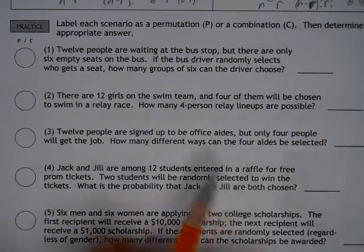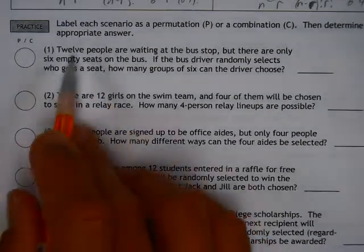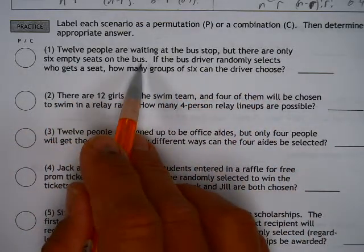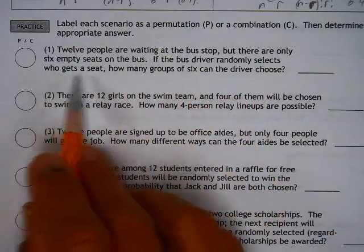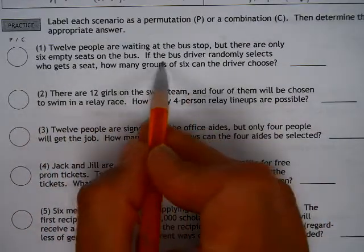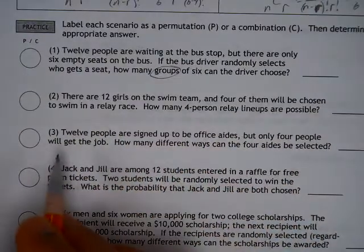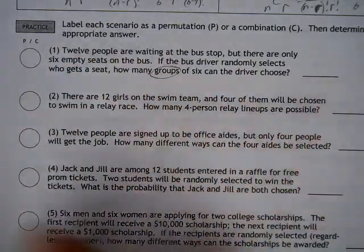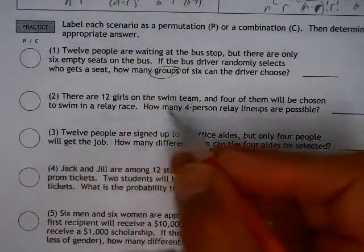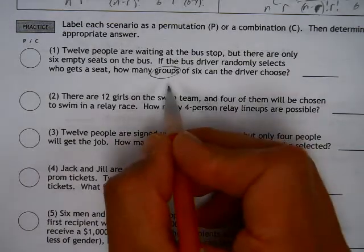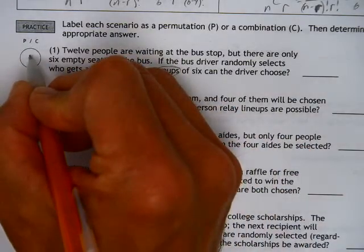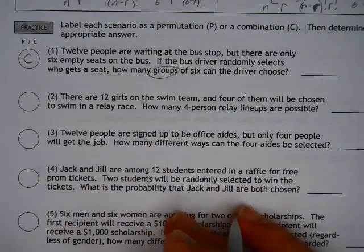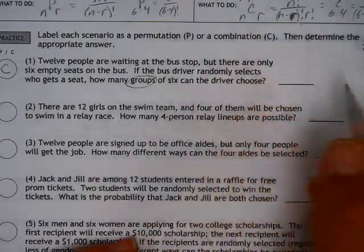Here we don't know which is which — we have to get that from the problem. 12 people are waiting at a bus stop but there's only six empty seats on the bus. The bus driver randomly selects who gets a seat. How many groups of six can the driver choose? The keyword is 'groups' — there's no specific order, so we're looking for selecting six people out of twelve, and that is a combination.